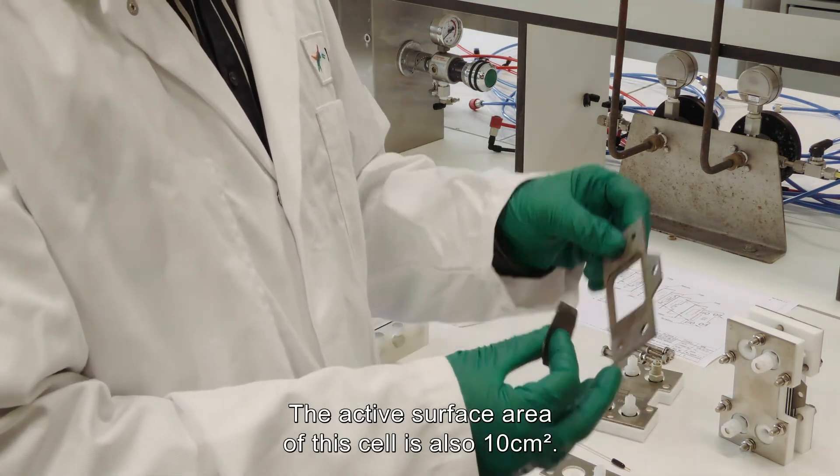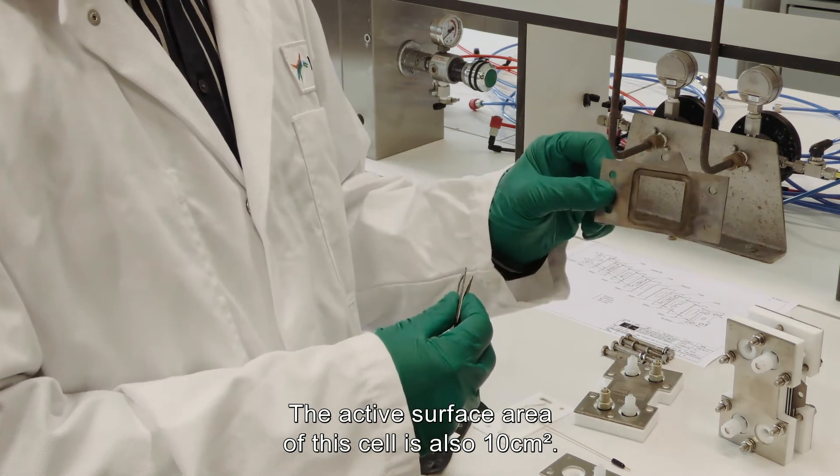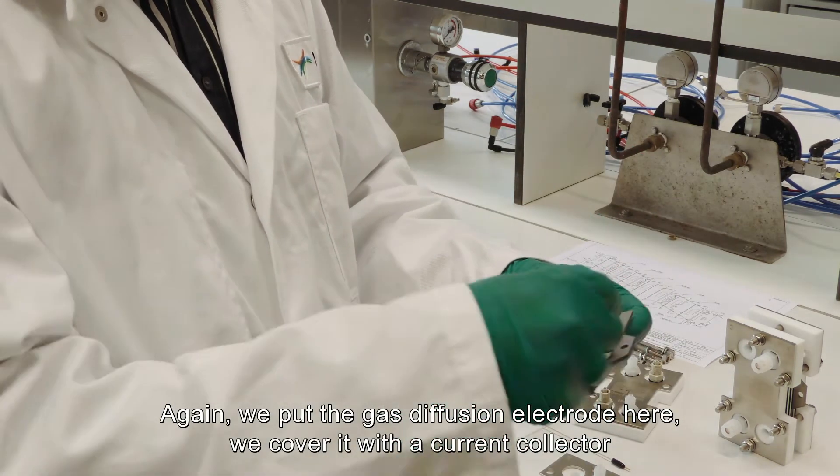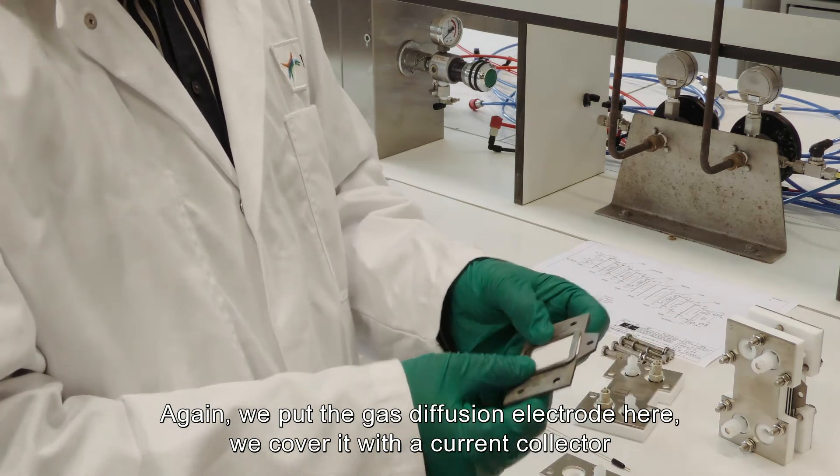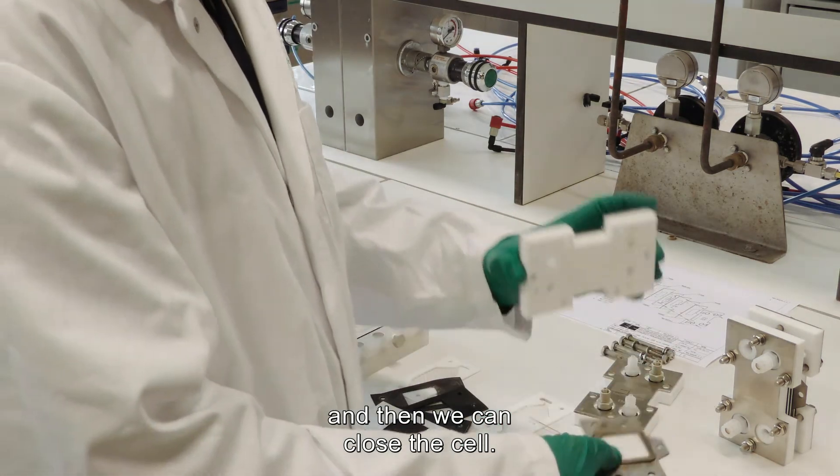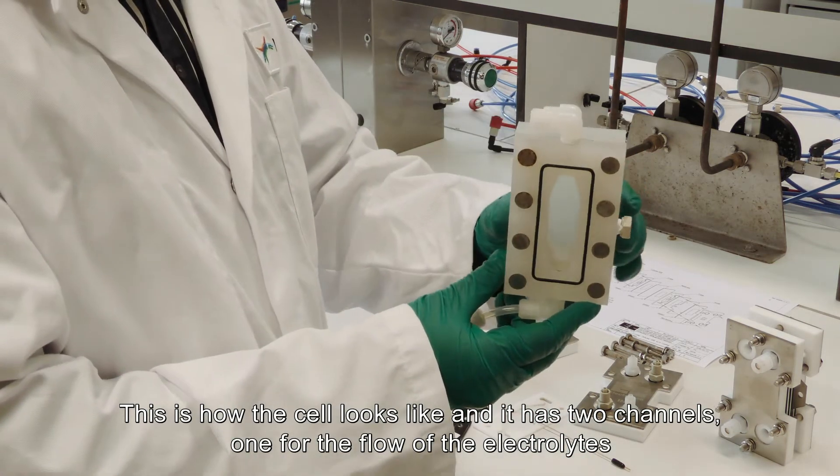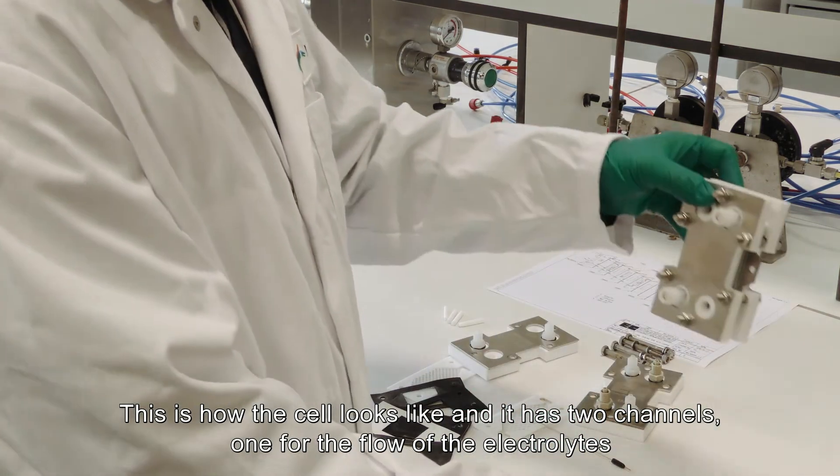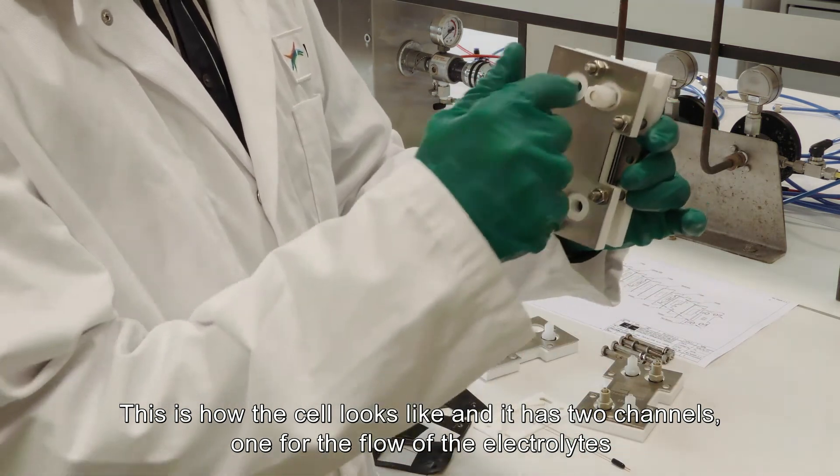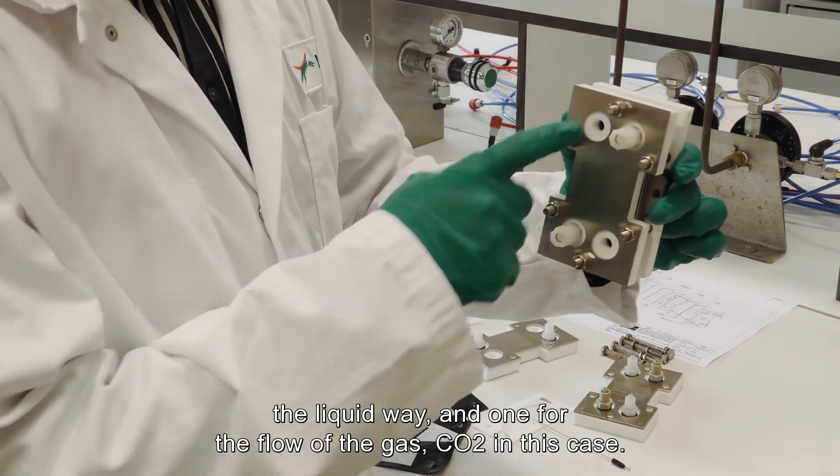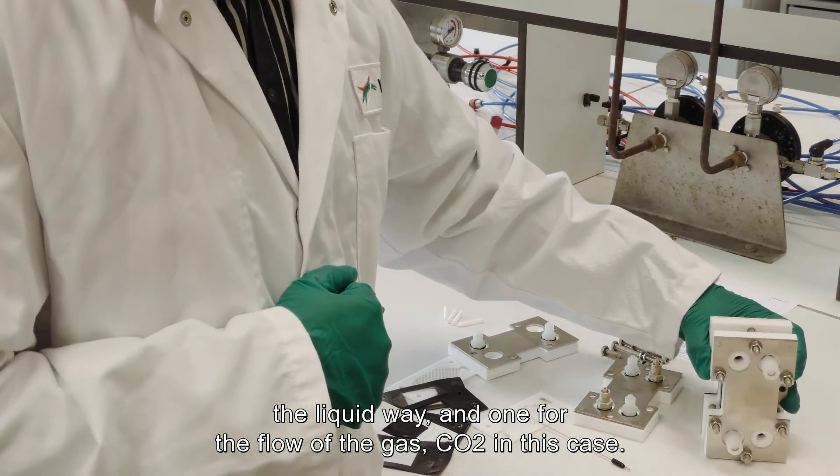The active surface area of this cell is also 10 cm². Again we put a gas diffusion electrode here, we cover it with a current collector, and then we can close the cell. This is how the cell looks like and it has two channels, one for the flow of the electrolyte, the liquid phase, and one for the flow of the gas, which is the carbon dioxide in this case.